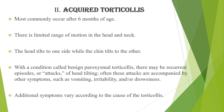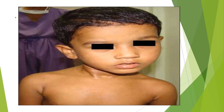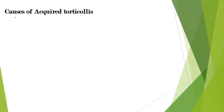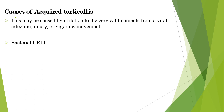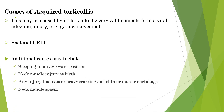Additional symptoms vary according to the cause of the torticollis. Acquired torticollis may be caused by irritation to the cervical ligaments from a viral infection, injury, or vigorous movement. Bacterial upper respiratory tract infections are also a common cause. Additional causes may include sleeping in an awkward position, neck muscle injury at birth, an injury that causes heavy scarring and muscle shrinkage such as a burn, and neck muscle spasm.